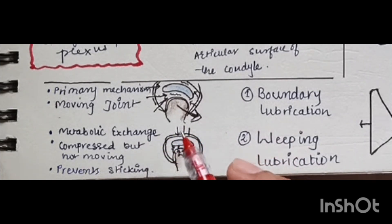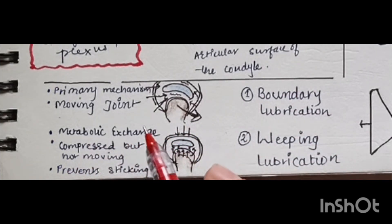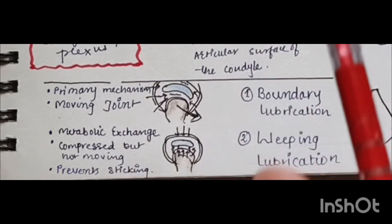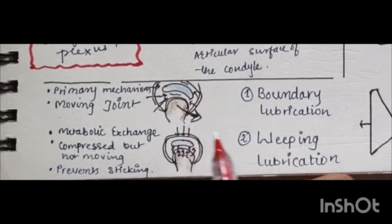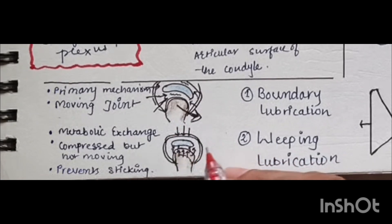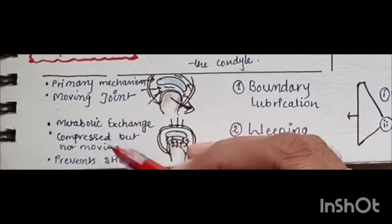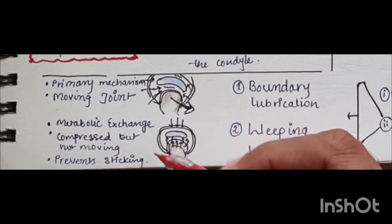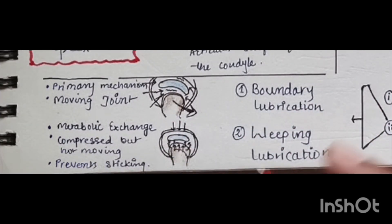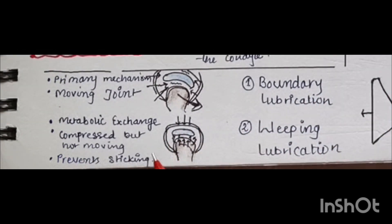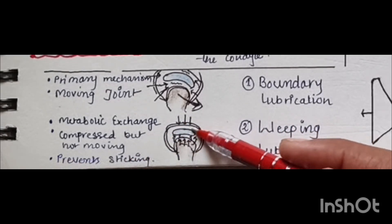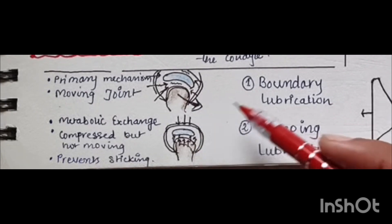Weeping lubrication acts when the joint is in a compressed state, for example when we are clenching our teeth tightly. At that moment weeping lubrication is in function and is responsible for metabolic exchange between the disc and other components. Weeping lubrication prevents the sticking of the disc to the condyle.